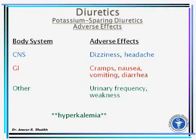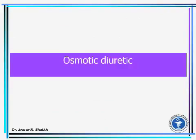Side effects of potassium-sparing diuretics: CNS — dizziness, headache; GI — cramps, nausea, vomiting, diarrhea; urinary frequency and weakness. The major concern is hyperkalemia — an increase in potassium concentration.